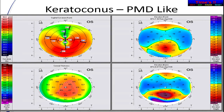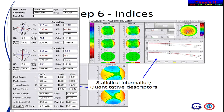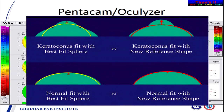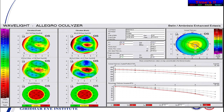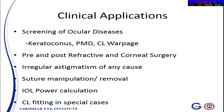Next come the indices — statistical values, different for each machine, which you should know well. They include thinness local, maximum curvature, anterior chamber parameters, and change in corneal thickness. The 95th percentile is the normal range — anything outside means the cornea is abnormal. There are also subtraction maps. Clinical applications include screening in keratoconus and refractive cases, pre- and post-refractive changes, other diseases, suture manipulation, IOL power calculation, and contact lens fitting.